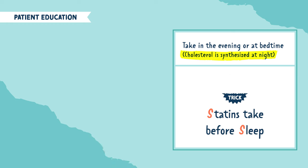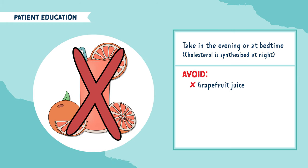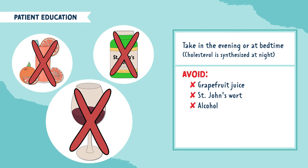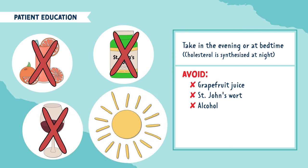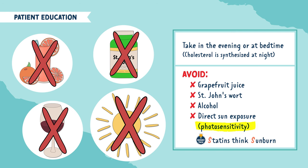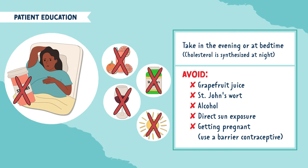There are some things you want to avoid while taking statins: avoid grapefruit juice because it can interact with statins; avoid St. John's Wort; avoid alcohol because statins can hurt the liver; and avoid direct sun exposure because statins can cause photosensitivity — memory trick: statins, think sunburn. You also want to avoid getting pregnant on this medication, as statins are not safe during pregnancy. Patients are instructed to use a barrier contraceptive while on this medication.